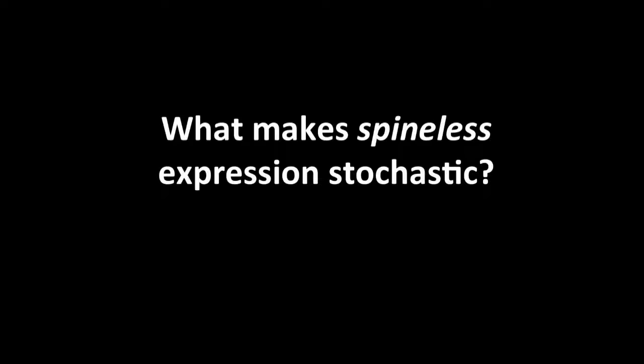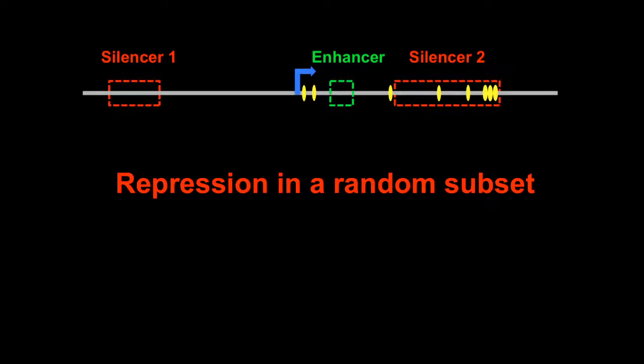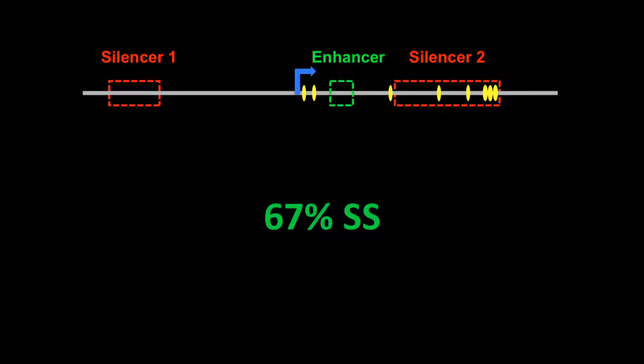Our lab is interested in asking what makes spineless expression stochastic. If we look at what's known about the locus, we know there's an enhancer that drives expression in every R7 cell, as well as two silencer elements that are required to repress spineless in a random subset of R7s. With all of these elements together, we get 67% spineless in our wild type or lab stock.